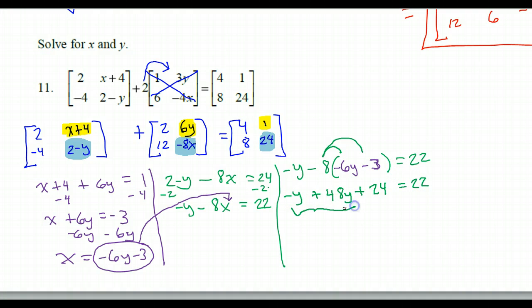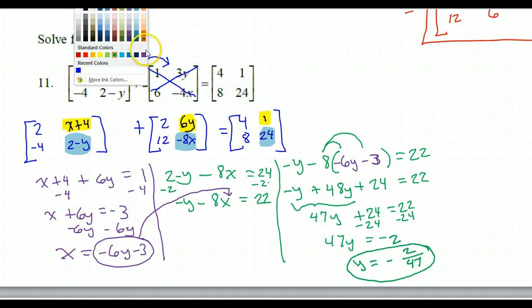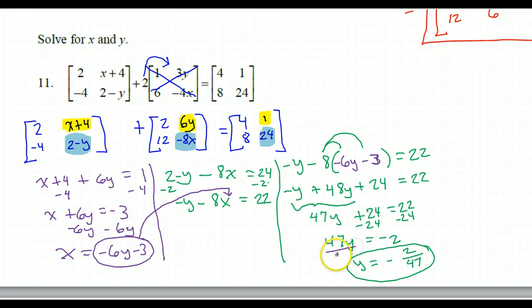So that's going to give me negative y. Now, be careful when you distribute. This is a negative 8, I'm distributing a negative. So, like, you know, negative times a negative is a positive. So this will be a positive 48y and a positive 24. A lot of kids mess that up and just distribute 8. It is a negative 8 I am distributing. Now, these are like terms. So if I put those together, I get 47y plus 24 is equal to 22.